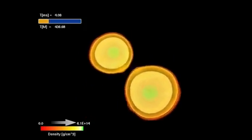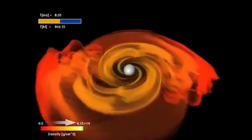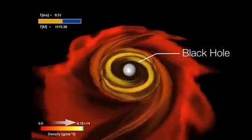Armed with state-of-the-art supercomputer models, scientists have shown that colliding neutron stars can produce the energetic jet required for a gamma ray burst. Earlier simulations demonstrated that mergers could make black holes.